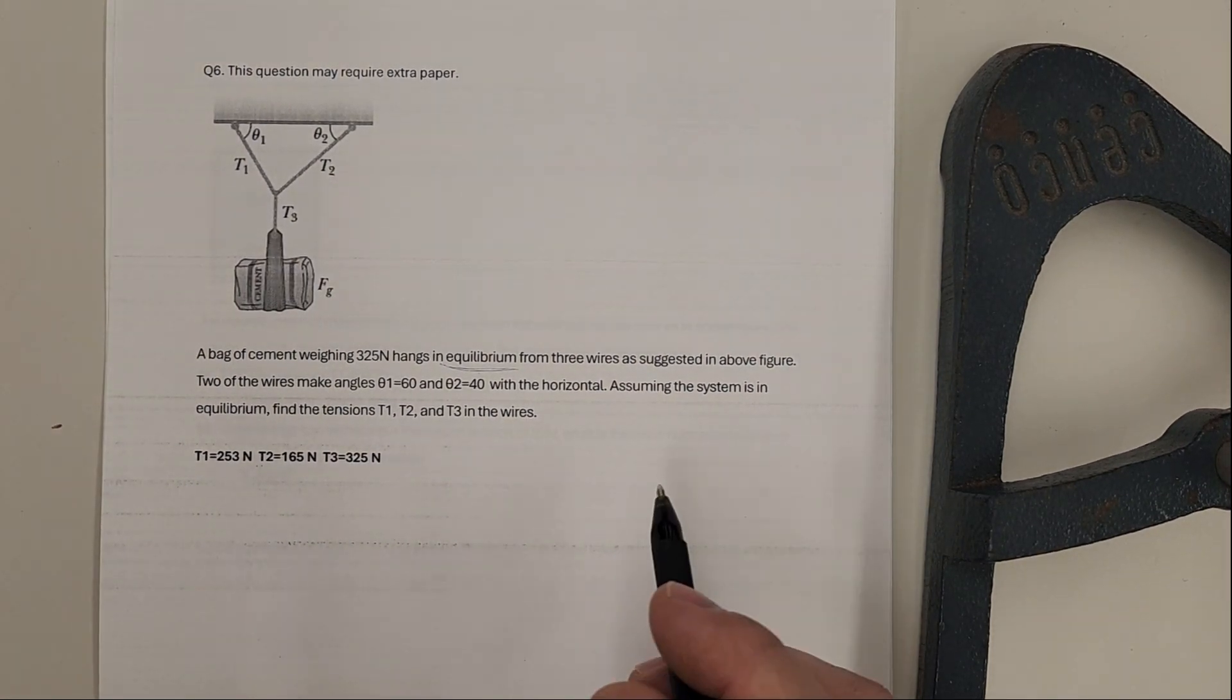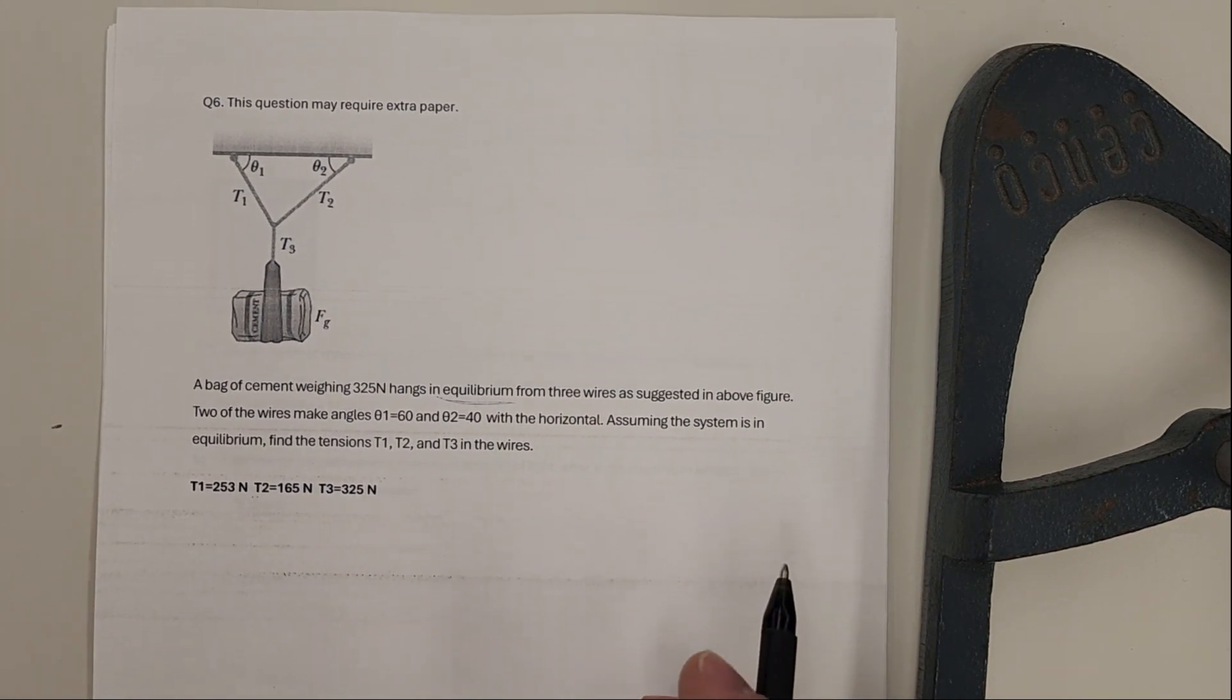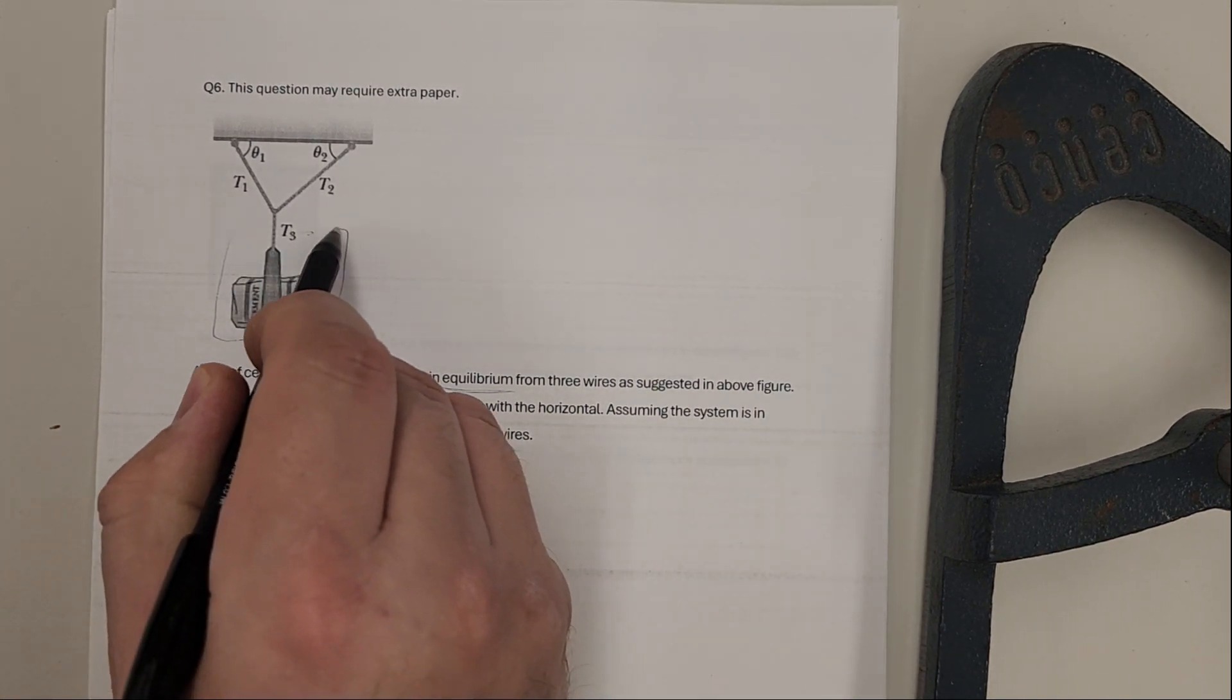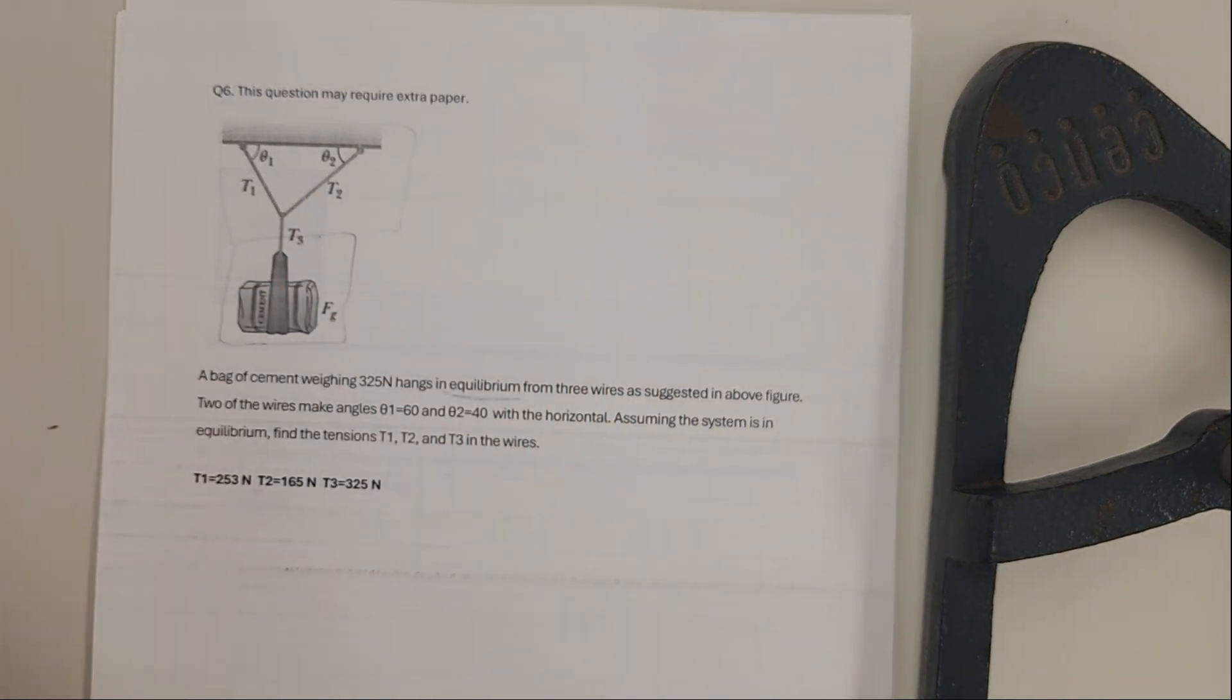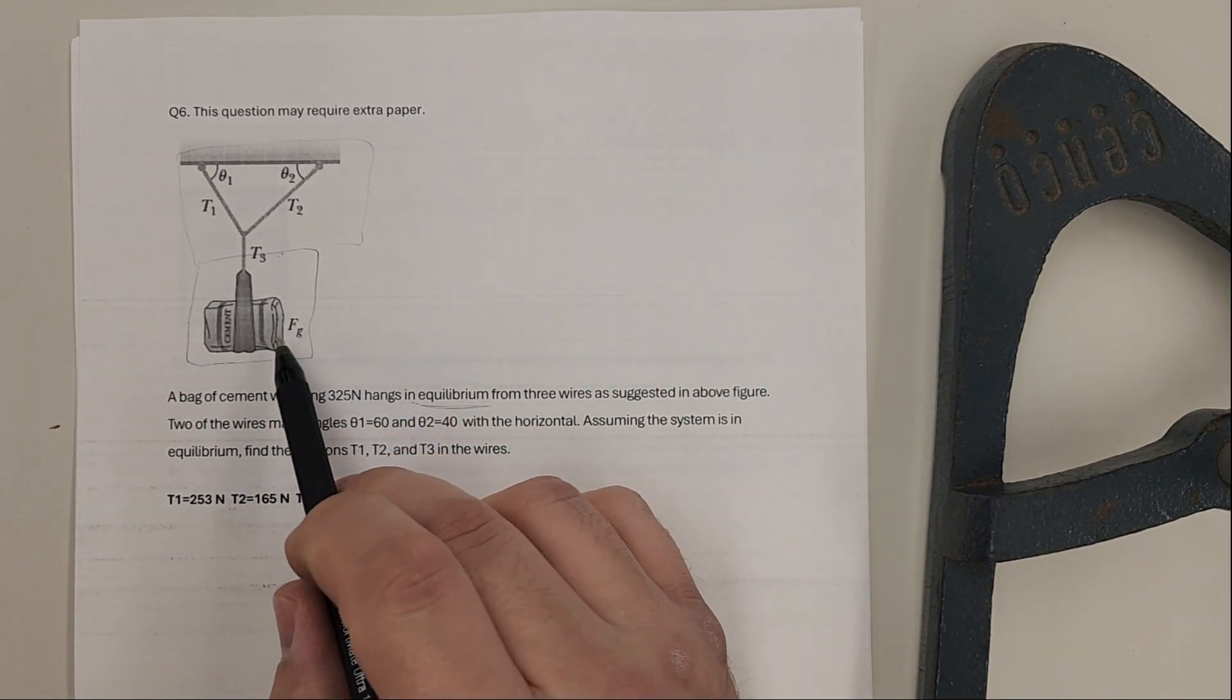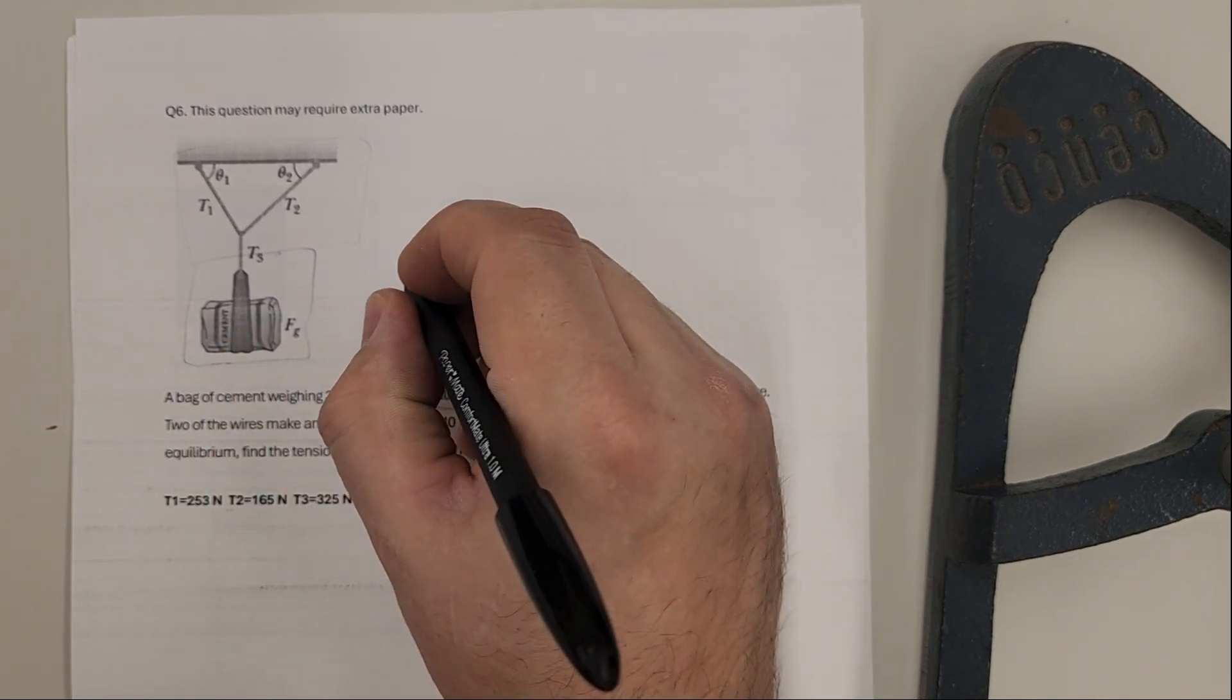We know tensions are forces, so we'll draw out our free body diagram. We can actually break this up into two parts. First, I want to just look at the cement and the rope, and then the second part, I'll look at the top. You can do it all in one, but it's a little bit more to consider. If I break it up, it's a little bit easier. Let's first look at the bottom here with that bag of cement.